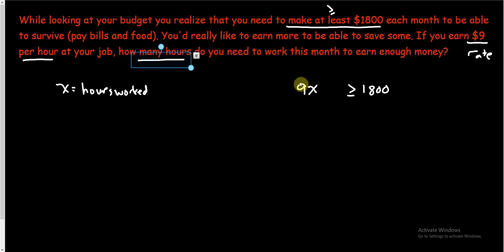We read it, understood it, we defined a variable, we've written our inequality, so now we'd like to solve this. I want to get x by itself. I need to divide both sides by 9. If I divide 1800 by 9, x needs to be greater than or equal to 200. So you need to work at least 200 hours. You need to work 200 or more hours.